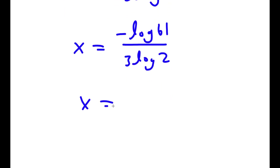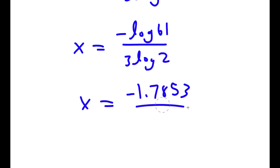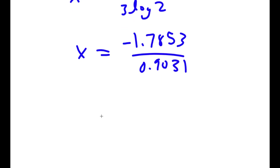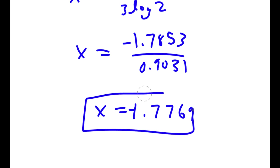So negative log 61 — log 61 is 1.7853 — so this is negative 1.7853 over 0.9031, which is equal to negative 1.7769.